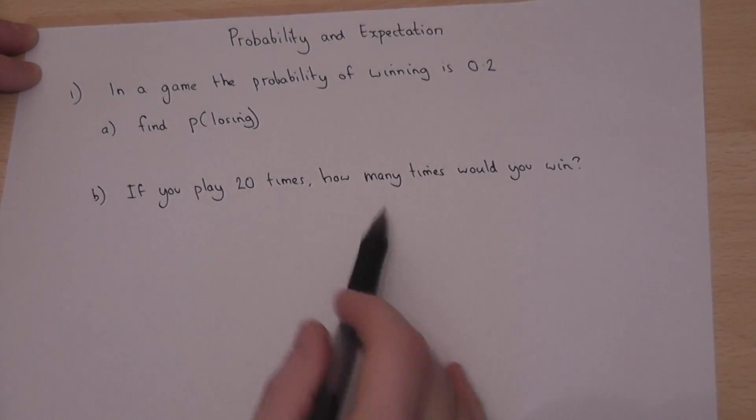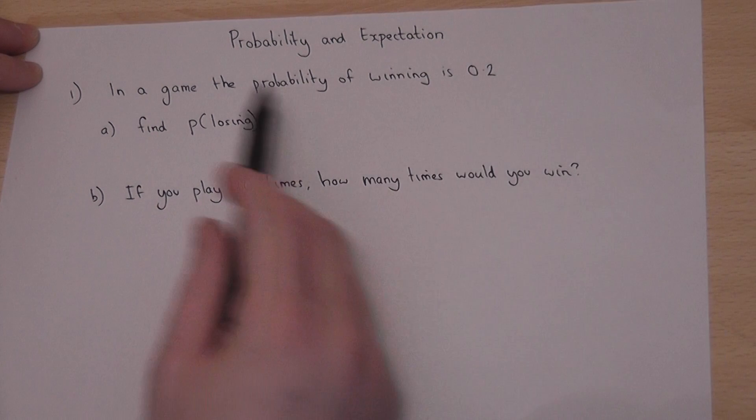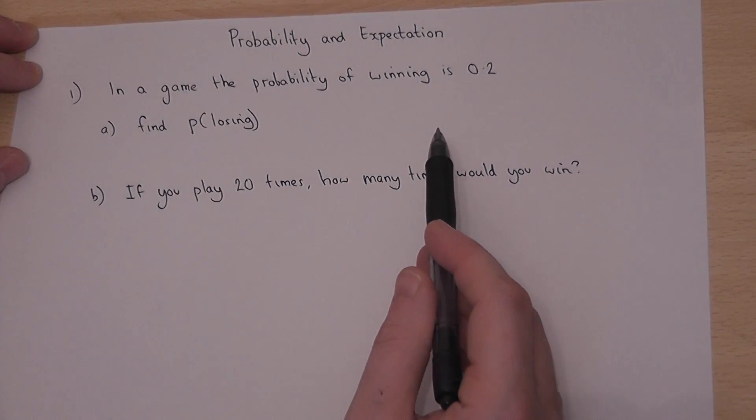This simple video looks at probability and expectation. Now suppose we have a game which we either win or lose, and the chance of winning is 0.2.